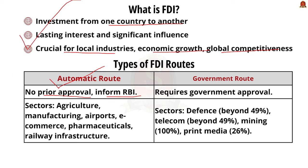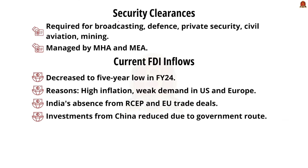The Government Route requires prior approval from the Government of India. It applies to sectors such as defense beyond 49%, telecom beyond 49%, and print media beyond 26%. Security clearances are required for specific sectors like broadcasting, defense, private security, civil aviation, and mining. Note carefully: it is managed by the Ministry of Home Affairs and the Ministry of External Affairs — not the Ministry of Finance — who actually manage security clearances with respect to FDI in India.